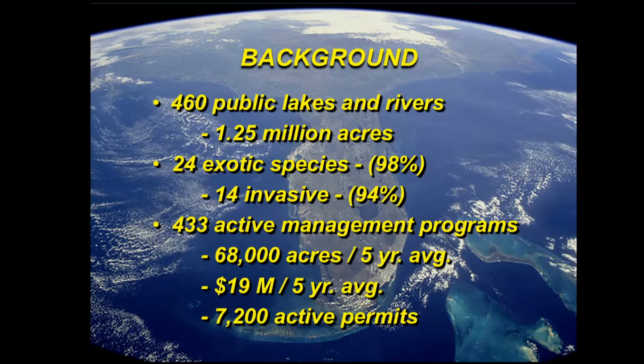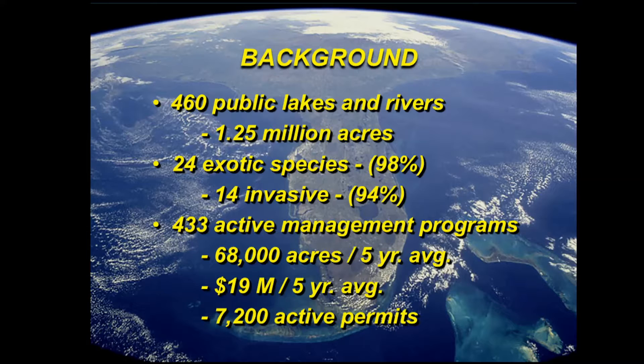Some statistics for Florida: 460 public lakes and rivers covering about 1.25 million acres. On annual inventories, we generally find 20 to 25 non-native aquatic plant species in those systems, and just about every water body in Florida has at least one non-native aquatic plant species. Fourteen of those species are considered invasive. This fiscal year there are active management programs in 433 of those water bodies, ranging from a couple hundred dollars to several million dollars depending on the size of the lake or the problem. Over the last five years, the average is about 70,000 acres of aquatic plants controlled statewide each year in public waters at a cost of just under $20 million.